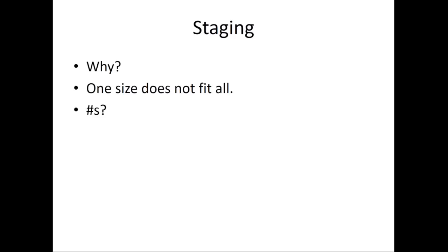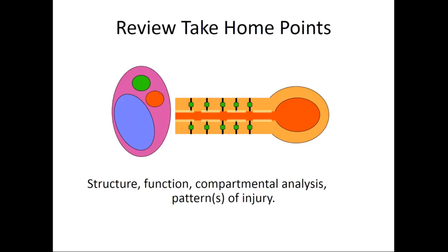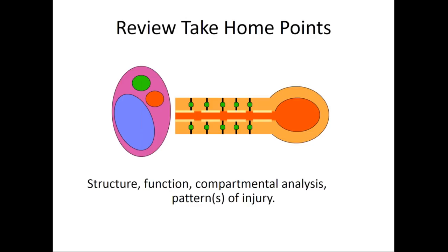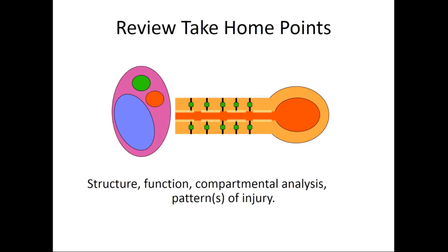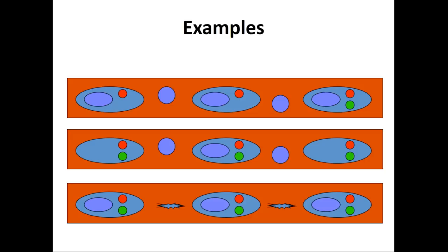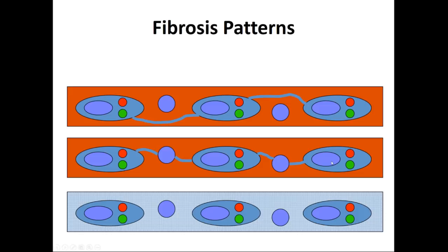Let's review the take-home points. I've shown you a compartmental approach to the liver to understand its structure and function. I've shown you four cases that highlight how we can perturb the vascular compartments and the different types of injuries and fibrotic responses that occur. By concentrating on a compartmental analysis, you can derive features. For example: no bile duct is an important feature; a problem with the portal vein is another; and zone 3 damage is a third. This highlights the compartmental approach, with fibrotic patterns including portal bridging fibrosis and the central-to-portal venous outflow pattern of fibrosis.